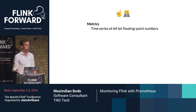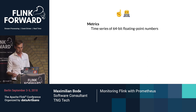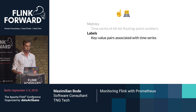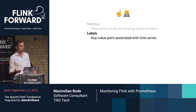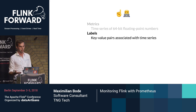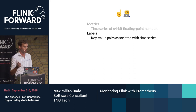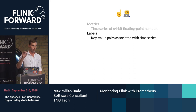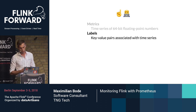Prometheus has a flexible and powerful data model built on the concept of labels, which are key-value pairs that you can associate with metrics. If you're familiar with more traditional metric systems, you might already guess that this model is more flexible than one where you have a hierarchical data structure, where you have your different information in your metric names separated by dots, for example.